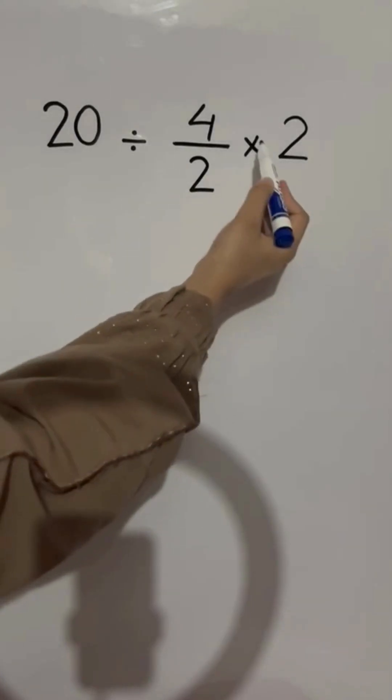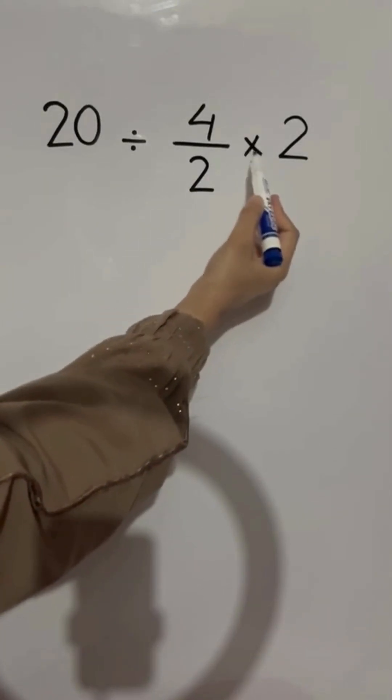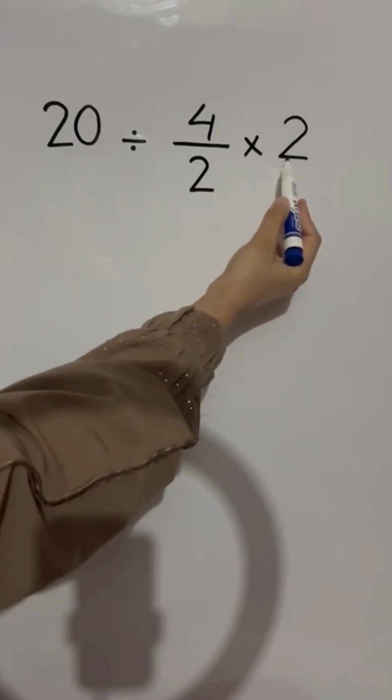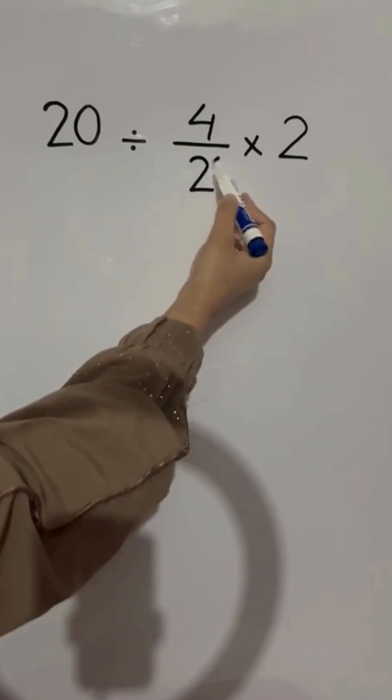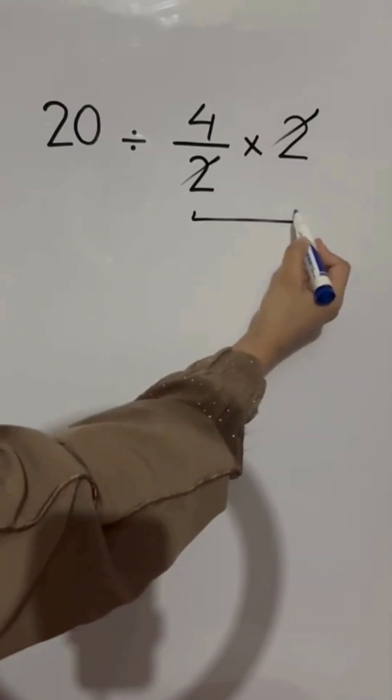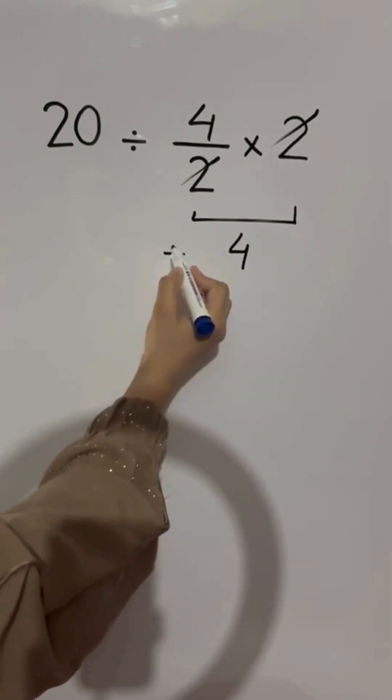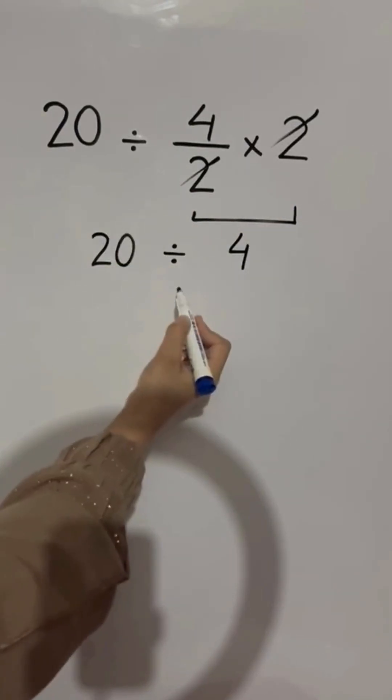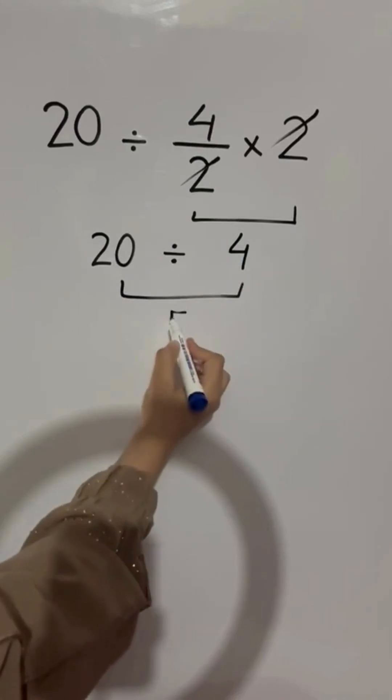In this expression, first we do this multiplication, 4 divided by 2 times 2. This 2 and this 2 can cancel each other out, so we have just 4. Remaining values we will just bring down as it is, and 20 divided by 4 which equals 5.